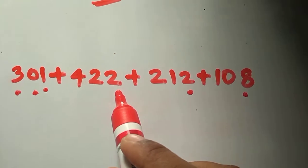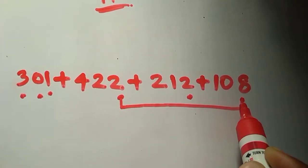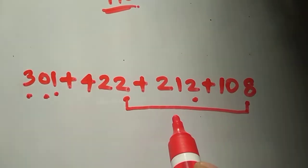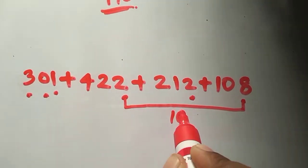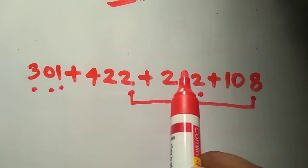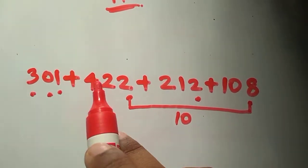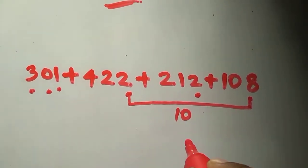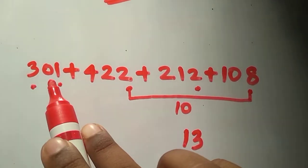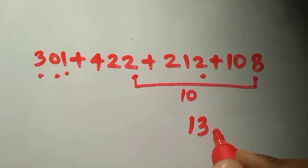Go to the 1's place of all the numbers and check for complements. Here 2 and 8 are complements, so 2 plus 8 gives 10. Then 2 and 1 are not complements, so we just add them: 2 plus 1 is 3. So 3 plus 10 gives 13 as the sum of all the 1's digits.